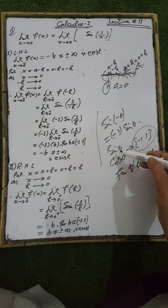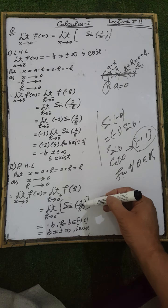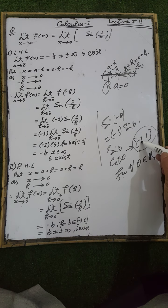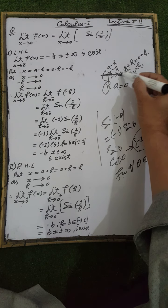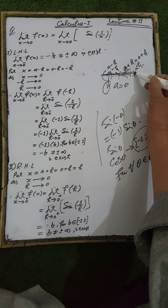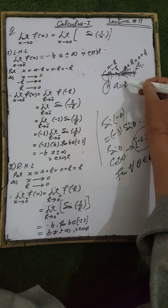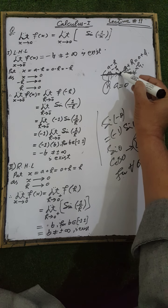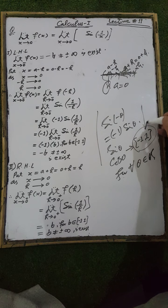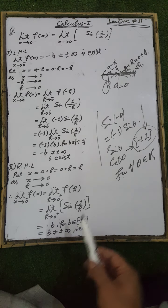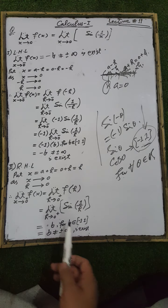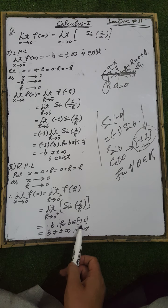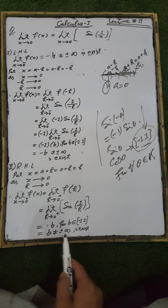The value of sine of any real number belongs to the closed interval minus 1 to 1. For any real number theta, these are real numbers. When we substitute these values — which tend to the point a = 0 — the result of sine of 1 over h belongs to the closed interval minus 1 to 1. This real number is denoted by b, where b belongs to the range set of sine theta, that is [-1, 1], and b is not equal to plus or minus infinity.